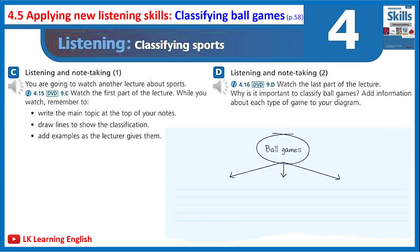Today I'm going to talk about ball games. There are many different ball games, but it is possible to classify them into three groups. The first group contains games played mainly with the hands. The second group consists of games played mainly with the feet. Thirdly, there are bat sports — sports played with some kind of bat, stick, or racket. I'll classify sports into these three groups, give examples, and look at the importance of classifying ball games for physical education.